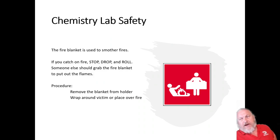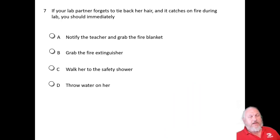Now again, use the fire blanket to smother fires. If you catch on fire, stop, drop, and roll. If someone sees you on fire, they grab the fire blanket and then they cover you up in it. What do we do? Remove the blanket from the holder. It's on a shelf. I will show you. Wrap it around the victim and put out the fire. Check for understanding: if your lab partner forgets to tie back her hair or his hair and it catches on fire during the lab, you should immediately notify the teacher and grab the fire blanket, grab the fire extinguisher, walk her to the safety shower, or throw water on her? Pause. And we come back and of course the answer is notify me and grab the fire blanket.